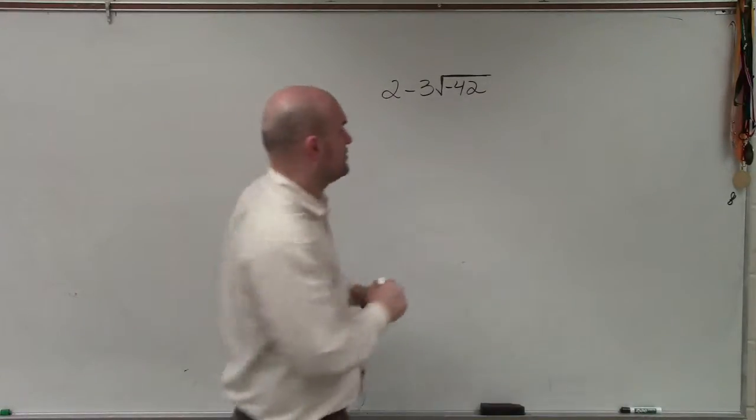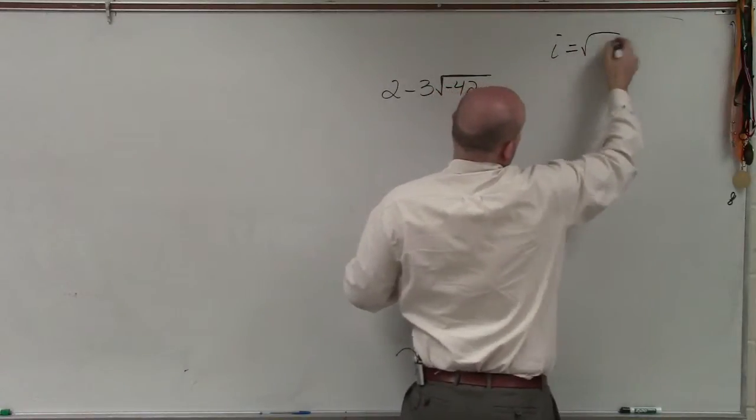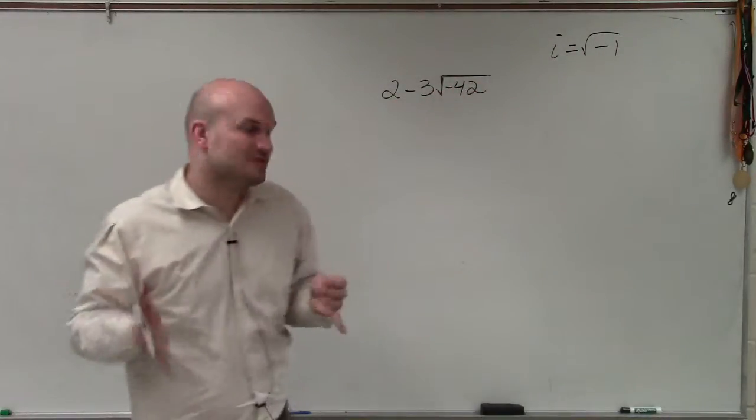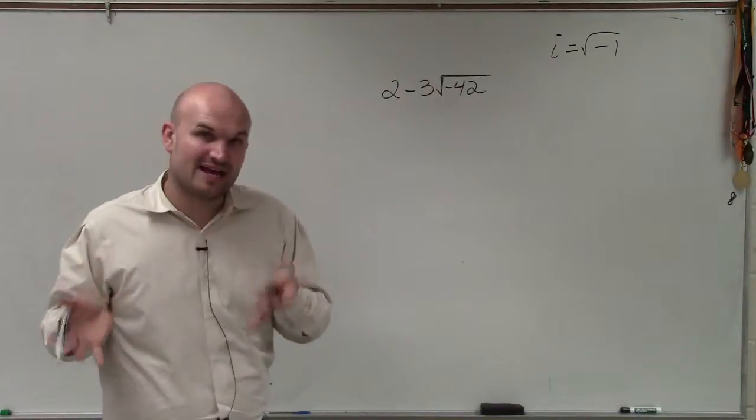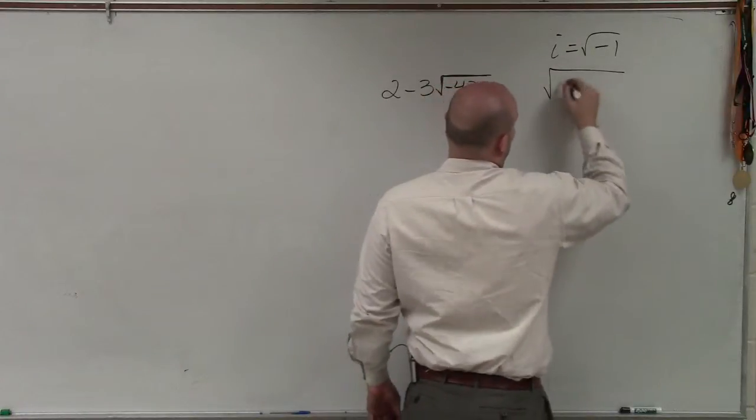To do that, we're going to simplify this radical using i. If you remember, i represents the square root of negative 1. So what I want to do is rewrite the square root of negative 42 as the square root of 42 times the square root of negative 1.